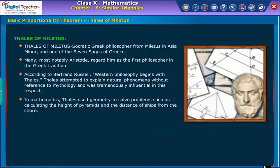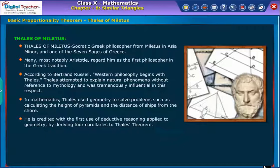In mathematics, Thales used geometry to solve problems such as calculating the height of pyramids and the distance of ships from the shore. He is credited with the first use of deductive reasoning applied to geometry by deriving four corollaries to Thales' theorem.